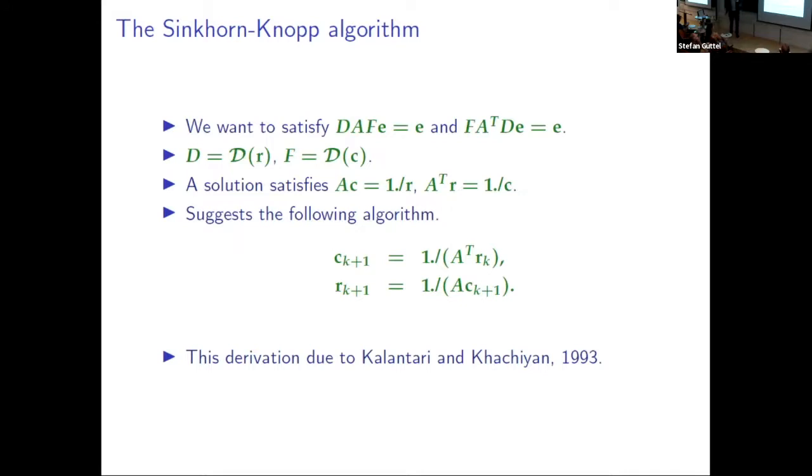And one of the things I noticed about this, and it was actually first pointed out in the 1990s, was that this can be done. All of this can be done on the diagonals, the diagonals of D and F. Let's say d is the diagonal, so this operator D, calligraphic D, takes a vector and turns it into a diagonal matrix. This can all be done on these vectors by this very simple iteration.